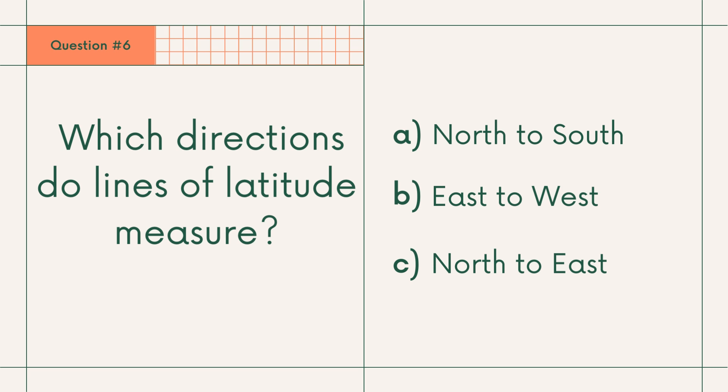Question number 6: Which directions do lines of latitude measure? A. North to south, B. East to west, or C. North to east. Answer: B. East to west.